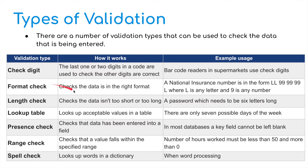A format check checks that the data is in the right format. For example, a national insurance number in the UK is in the form of two letters and then a series of six numbers. Your tax code, your driving license, your student identification number, and your passport number will all have a specific format. A length check checks that the data isn't too short or too long — for example, a password needs to be six letters long, or your PIN number for the ATM machine needs to be four or five digits long.